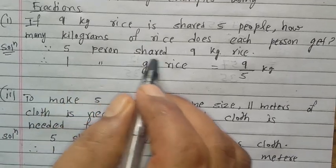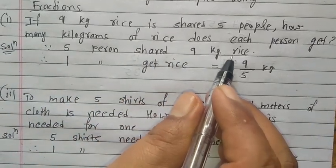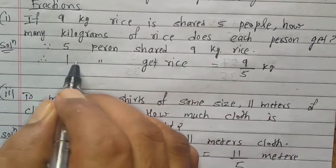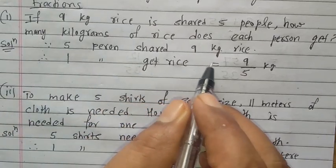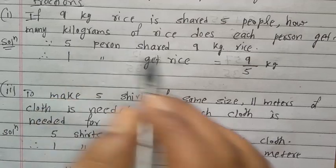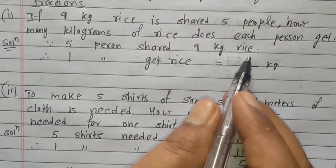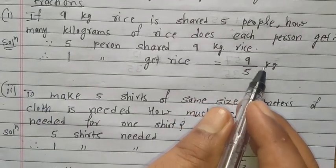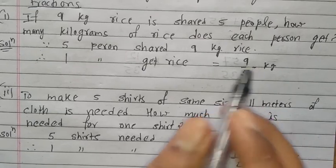Since 5 persons shared 9 kg rice, therefore 1 person gets the rice equal to this 9 written in numerator and this 5 written in denominator. That means 9/5 kg.